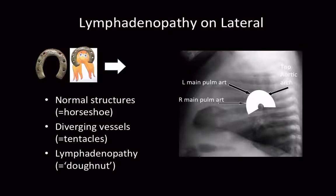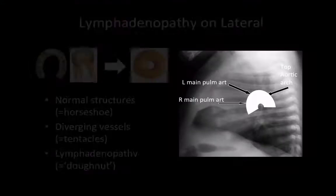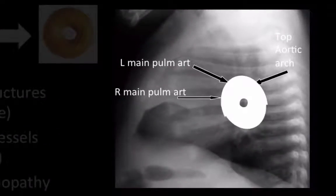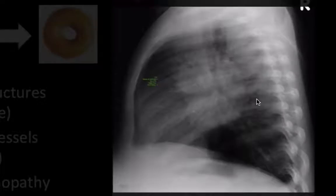The lymphadenopathy you will see on a lateral x-ray simplistically looks like a donut. That's what it will look like on a lateral chest radiograph. I'm going to show you with an arrow — it's really the bottom parts that you can confidently identify as representing lymphadenopathy.